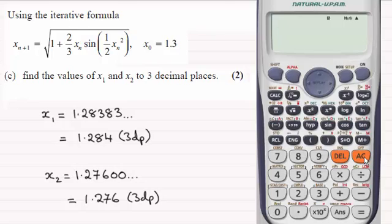Clear the screen and now start to enter the iterative formula, which is the square root. Then it is 1 plus, and then we've got 2/3, so put the fraction button, put 2 on the top and 3 on the bottom, then come out of that fraction function.